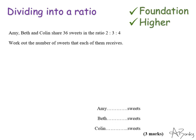Now in the last example, it didn't matter the order of the ratio. I just wanted to divide up the piece of wood. In this example, the order does matter because the 2 represents Amy. Because they listed Amy first in the question, the 2 represents Amy. The 3 represents Beth, and the 4 represents Colin.